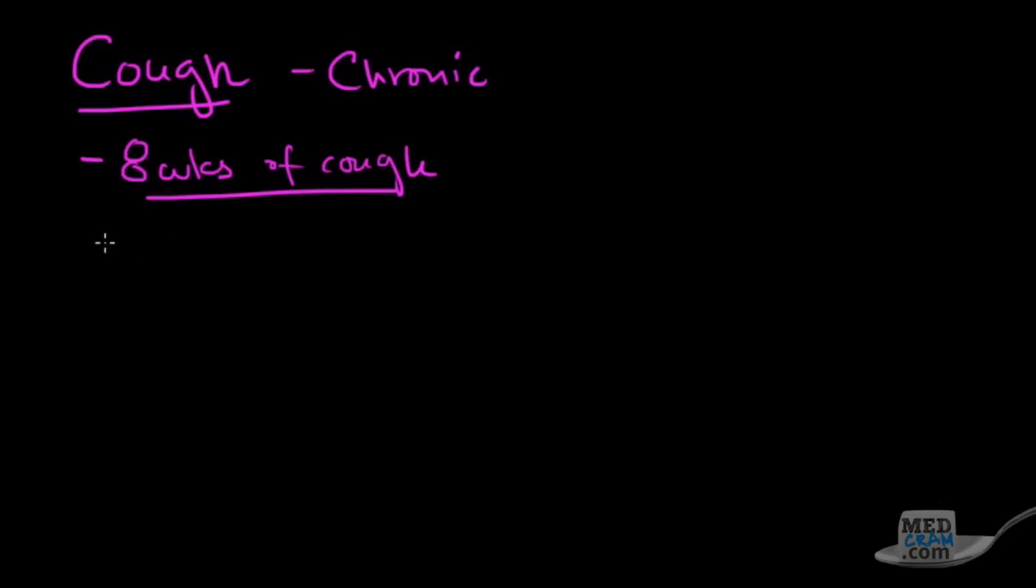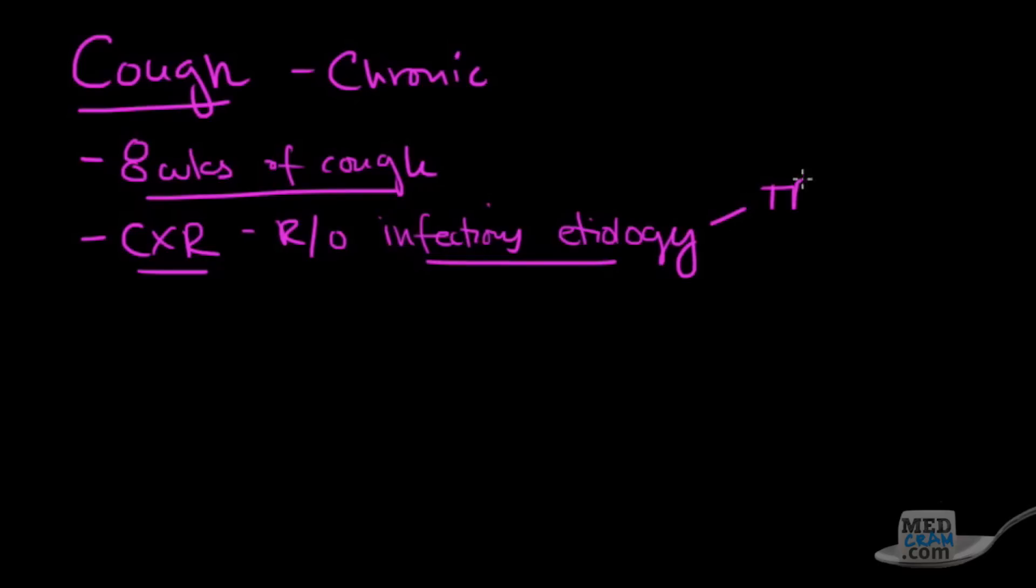The first thing you want to do if this is going on is, generally speaking, you want to get a chest x-ray and rule out infectious etiology. This is a big problem. If you've got an infectious etiology, you're thinking about things like tuberculosis, pneumonia. This is stuff that you ought to do right off the bat to rule that out.